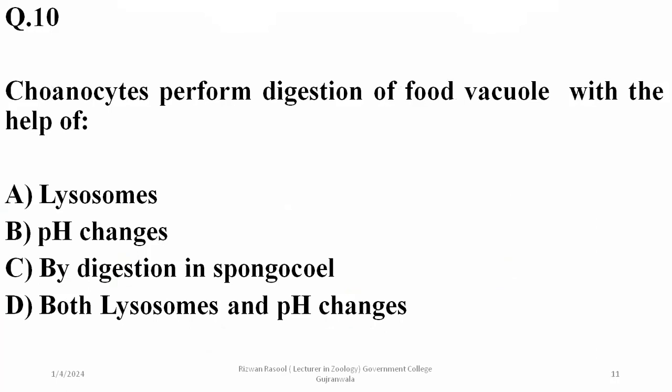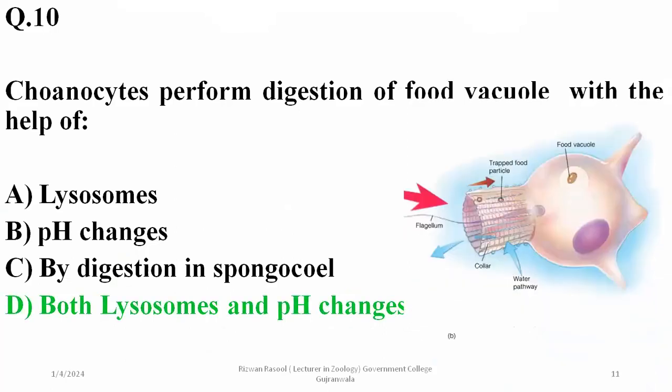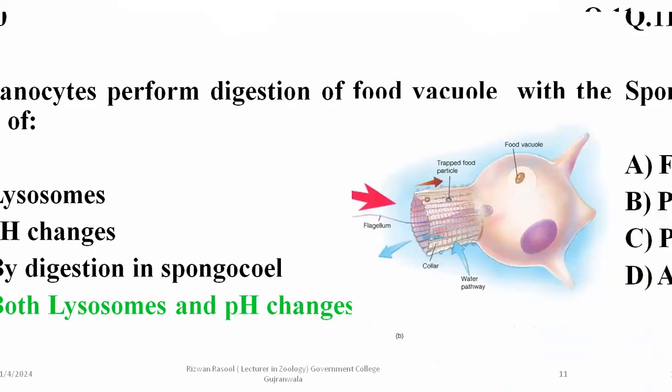Archaeocytes perform digestion of food with the help of lysosomes as well as pH changes, so D is the right option. Archaeocytes can perform digestion using lysosomes as well as pH changes.